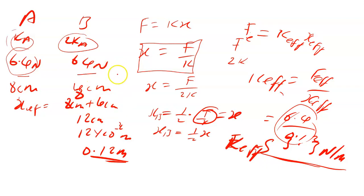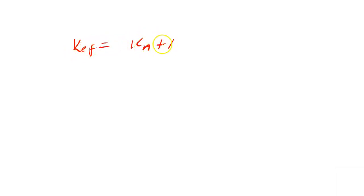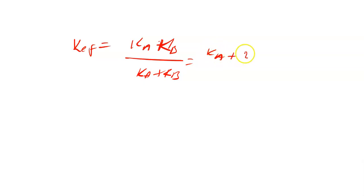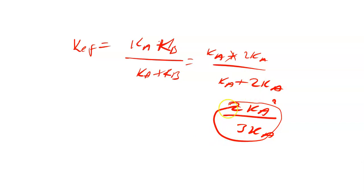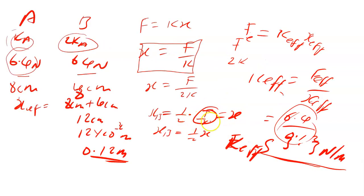Alternatively, you can use the series formula: Keff equals (kA times kB) over (kA plus kB). Substituting kB equals 2kA, you get (kA times 2kA) over (kA plus 2kA), which simplifies to 2kA squared over 3kA. You know the spring constant for A, so plug in that value and you should get the same answer as the previous method.